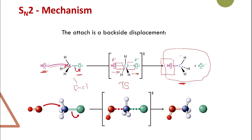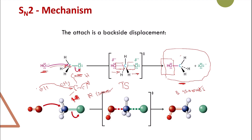the OH must attack on the opposite side. The chloride will leave on one side and the OH will attack on the other side. The arrangement of the groups will be different compared to the first one. So if you start with an R isomer, you're going to end up with an S isomer. There is an inversion of configuration for the bimolecular nucleophilic substitution because the attack takes place on the opposite side. If it's R you end up with S, and if you start with S you end up with R.